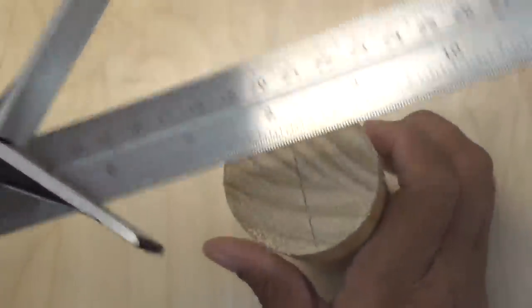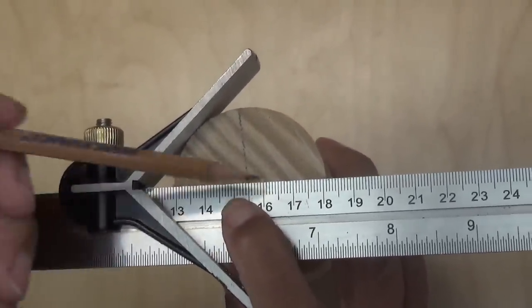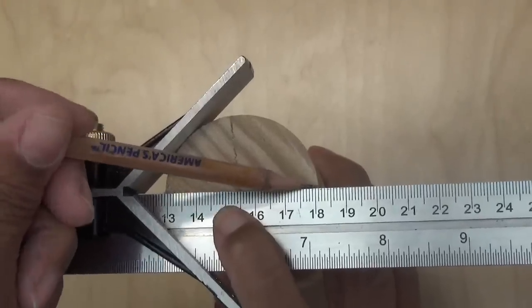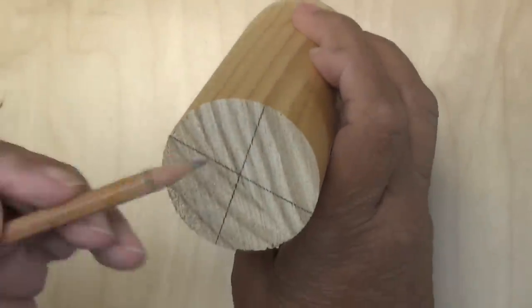Now I'm going to twist the dowel here and I'm going to strike another line and it's going to help me find the center of this wooden dowel here.